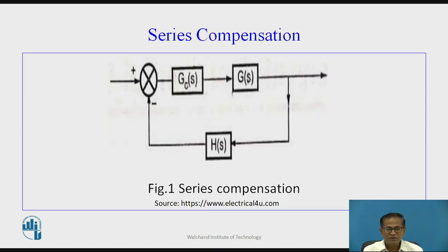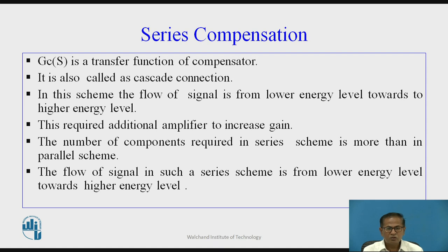This is the block diagram of series compensation. Here, G(s) is the transfer function of the forward path, H(s) is the transfer function of the feedback path, and Gc(s) is the transfer function of the compensator which is connected in series. That is why this is called the series compensator, also known as a cascade connection. In this scheme, the flow of signal is from lower energy level towards higher energy level. This requires an additional amplifier to increase the gain. The number of components required in the series scheme is more than in the parallel scheme.